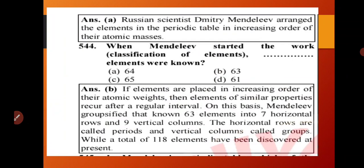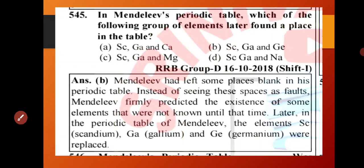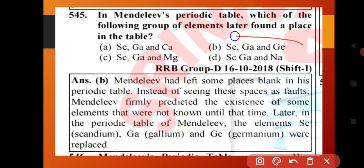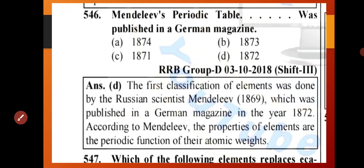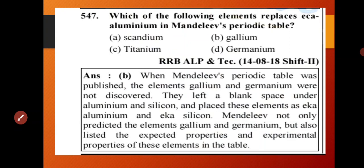When did Mendeleev start his work? Mendeleev's periodic table was published in 1872. Which group of elements was later found? Which of the following elements replaced aluminum?